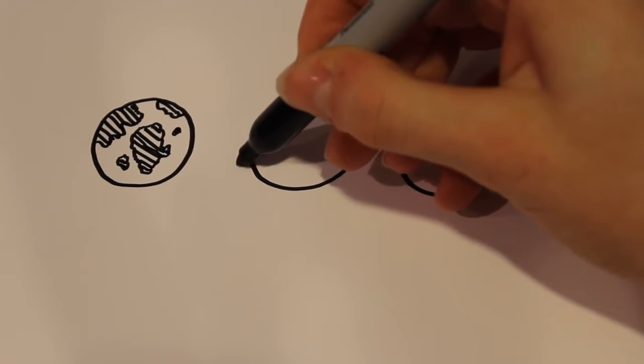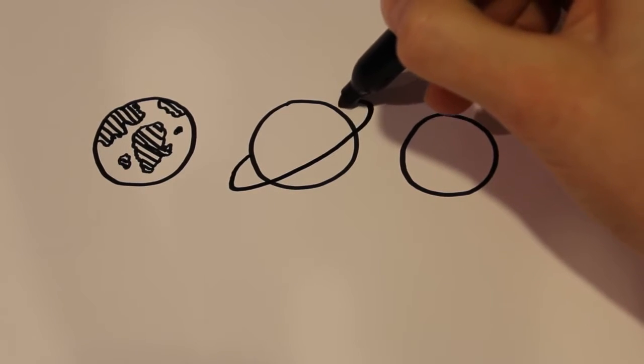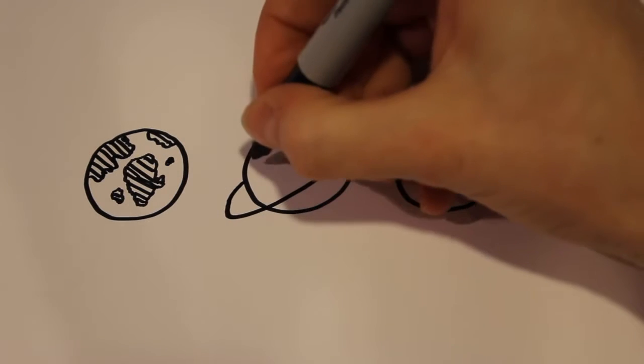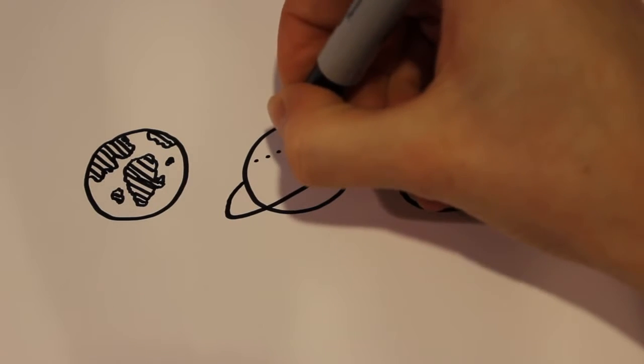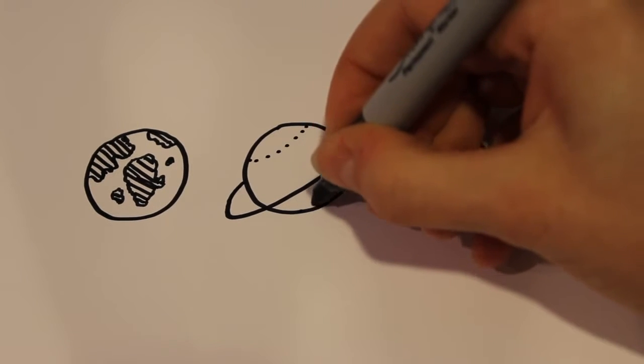And then for Saturn, all you need to do is draw a line cutting through diagonal like that and connect it. And then for the details, I'm going to draw small dots kind of going in a sphere shape around. Then same thing on the bottom.